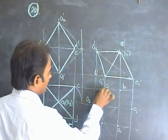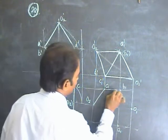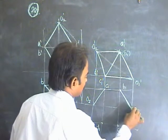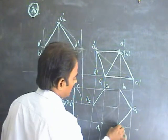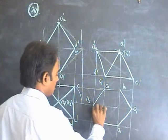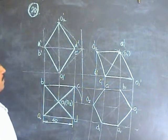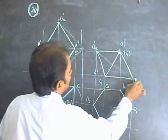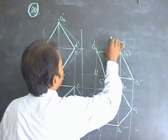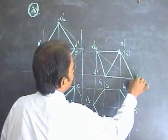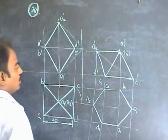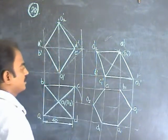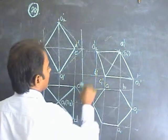Draw the extreme edges first. You are getting a hexagonal-like shape. Now see the visibility. This is your extreme corner, this is your extreme corner. The OCD face — O dash to C1 dash is invisible, O dash to D1 dash is invisible.